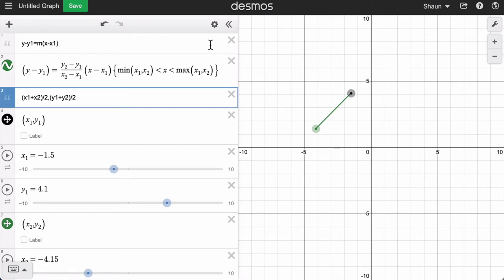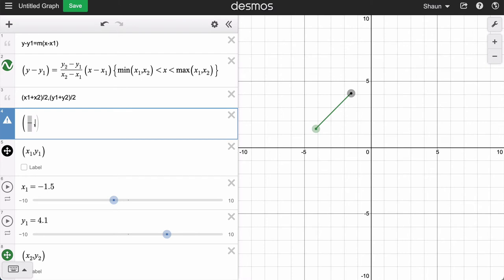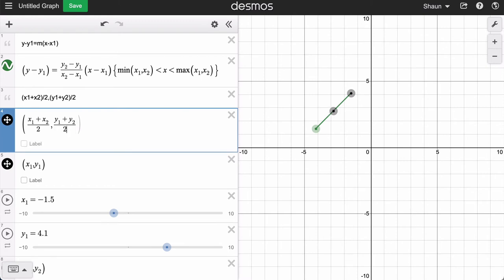So in Desmos, we can set up a point. Just type in a point command, get your fractions going, comma, fractions, and x1 plus x2 over two, that should be over two, and then y1 plus y2 over two, and boom, there's our midpoint. Now if you click label right here, it'll give you a numerical value. If you type in midpoint, though, it erases that numerical value.